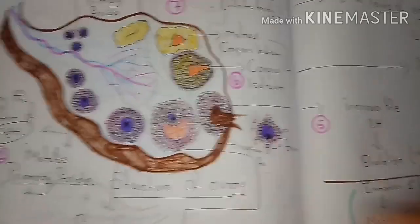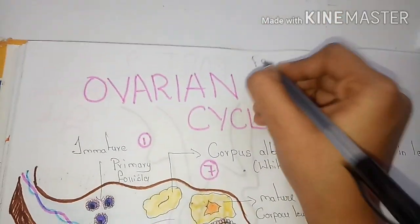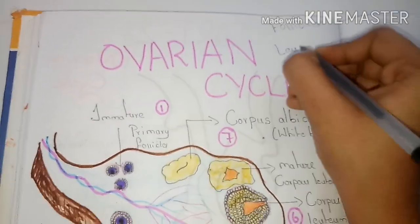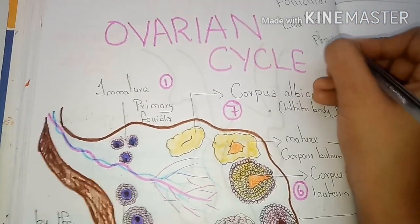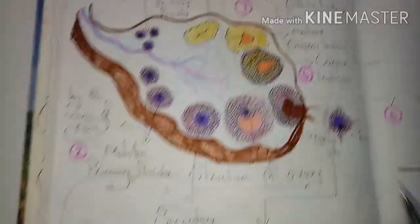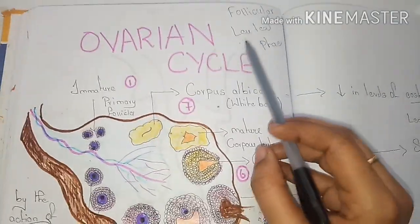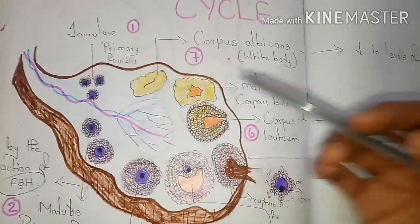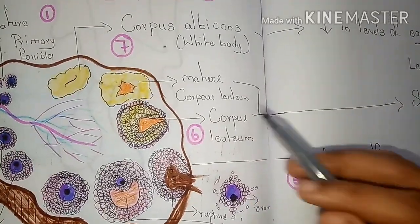The ovarian cycle runs in two phases: the follicular phase and the luteal phase. The development of follicles in the ovary is known as the follicular phase. After the ovulation process, the immature corpus luteum matures — beginning the luteal phase.